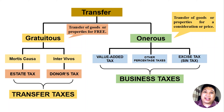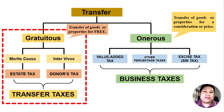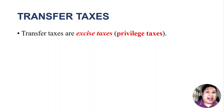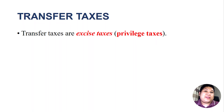In our next following videos, we will discuss more about taxes involving gratuitous transfers — meaning we will talk about transfer taxes. Transfer taxes are excise taxes. Apart from the excise tax on sinful products mentioned earlier, when we say excise tax in this particular context, excise tax refers to a privilege tax — meaning this tax is imposed on a right. So excise taxes could also mean a tax on a right; it's a privilege tax.